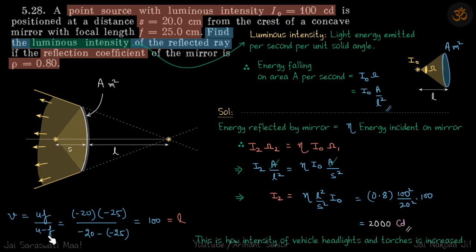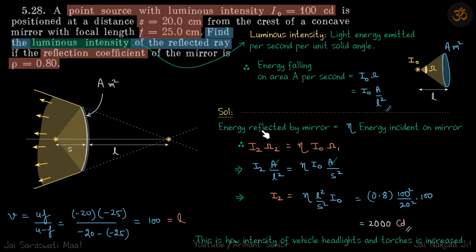To find the image distance, we use the mirror formula: v equals uf divided by (u minus f). Here u is −20 because s is 20, and f for the concave mirror is −25. Solving gives v equal to +100, meaning the image is to the right at a distance of 100 cm. So l is 100.